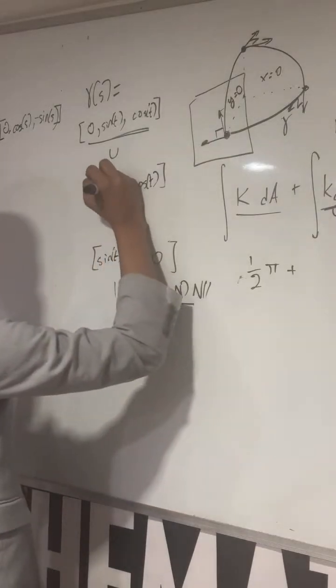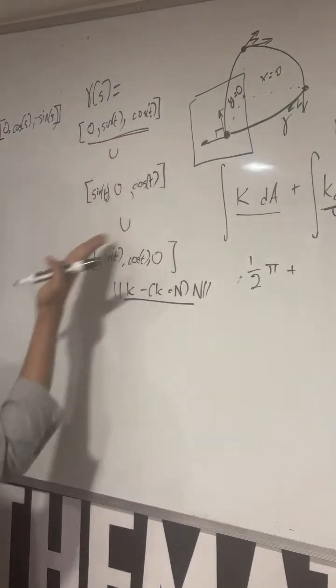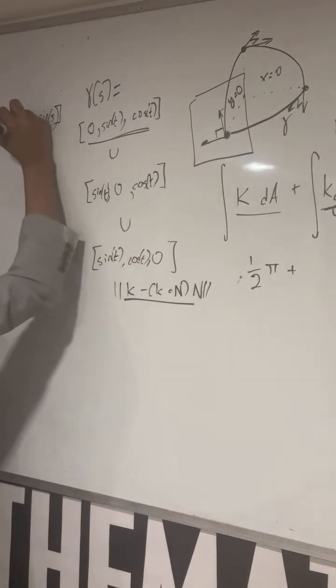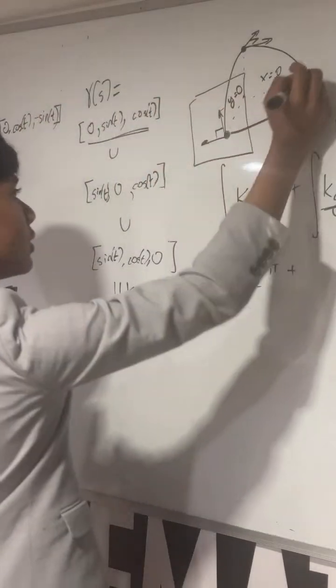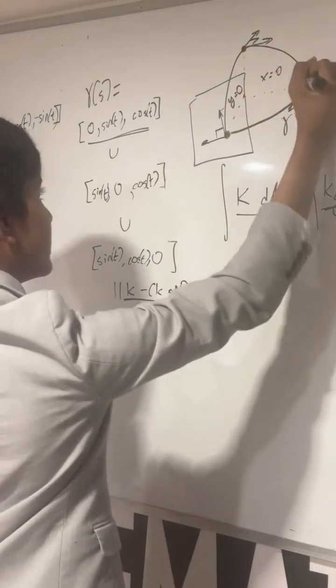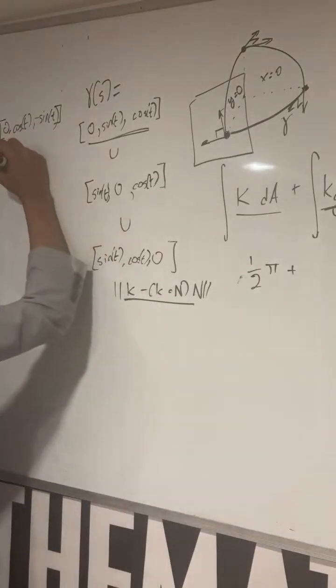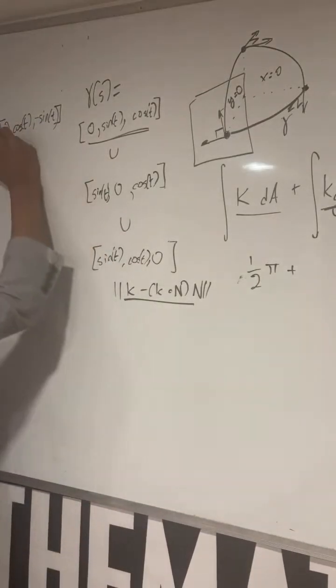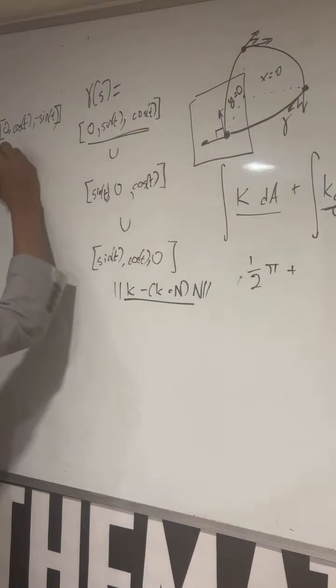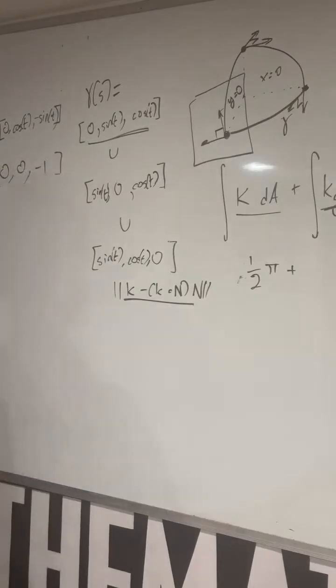So you have these three curves, and you'll find what? You'll have 0 cosine t minus sine t. What is t at this point, right here? Well, you start from here. By the time you reach here, t has to be pi over 2. So 0 cosine pi over 2 is 0, and minus sine pi over 2 is minus 1.